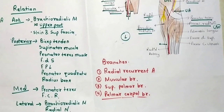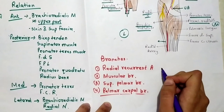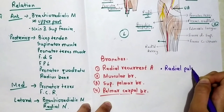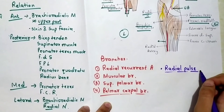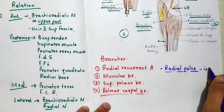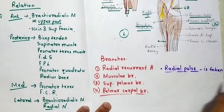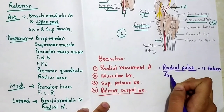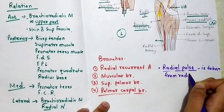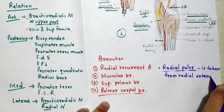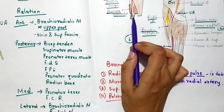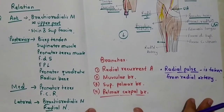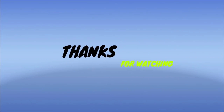There is one clinical point: the radial pulse which we take in the wrist region is from this artery. The pulse is taken from the radial artery when it is present over the radius bone in the wrist region, and we can feel it by palpation over this region.